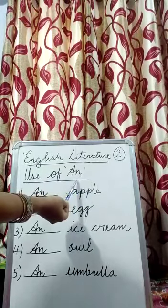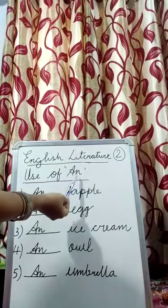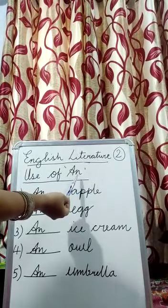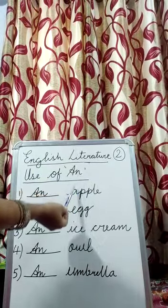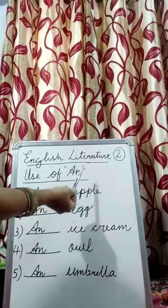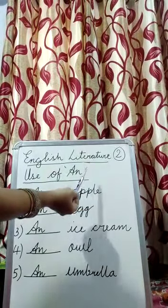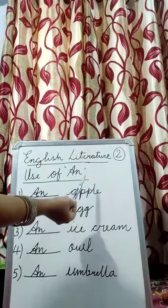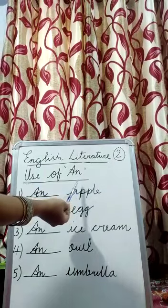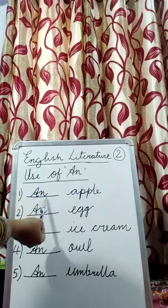So the words which start with vowels — that is A, E, I, O, U — we use AN.